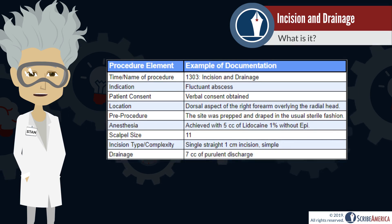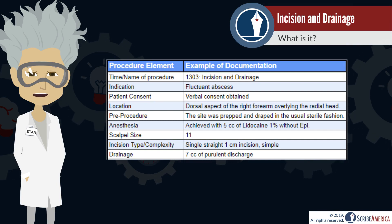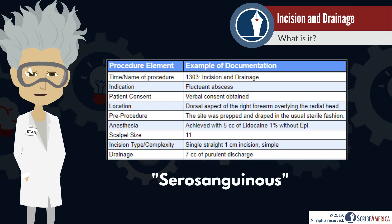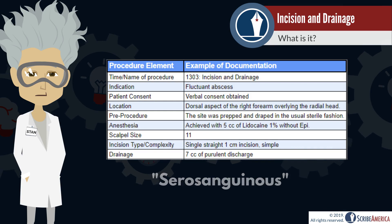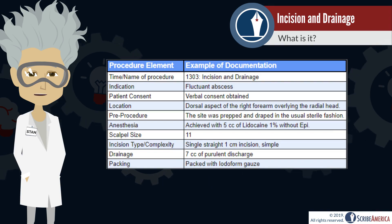The clinician may also ask that you document the type and/or complexity of the incision. The amount and appearance of any discharge are needed. If the discharge looks like pus, you'll hear it described as purulent. Blood-tinged, watery discharge may be described as serosanguinous.